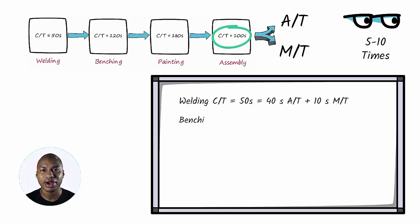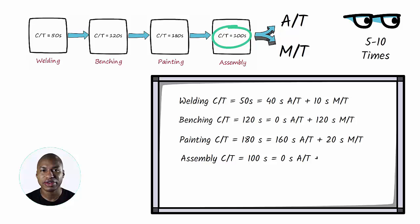Benching cycle time equals 120 seconds equals 0 seconds automatic time plus 120 seconds manual time. Painting cycle time equals 180 seconds equals 180 seconds automatic time plus 20 seconds manual time. Assembly cycle time equals 100 seconds equals 0 seconds automatic time plus 100 seconds manual time.